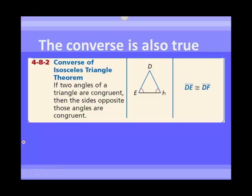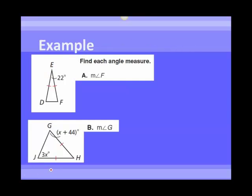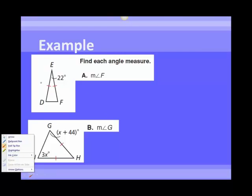Here we have the converse of the isosceles triangle theorem, which just switches the hypothesis and the conclusion. This says if the angles are congruent, then we can draw the conclusion that the sides are also congruent. Before we said if the sides are congruent then the angles are congruent; now we're saying if the base angles are congruent, then the sides are congruent. We could do a similar proof to show that. You can apply either the converse or the isosceles triangle theorem. In example 1, we're going to apply the isosceles triangle theorem.